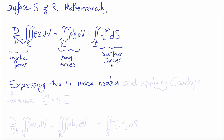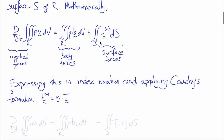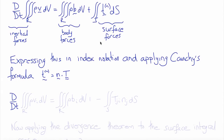Expressing this same equation in index notation and using Cauchy's law to convert traction into stress, making use of the unit normal N to the surface, where little t is equal to N dot big T, we obtain the material derivative of the triple integral over R of rho V_i with respect to volume, equal to the triple integral over R of rho B_i with respect to volume, minus the surface integral of T_ji N_j, which is the surface traction from Cauchy's formula.